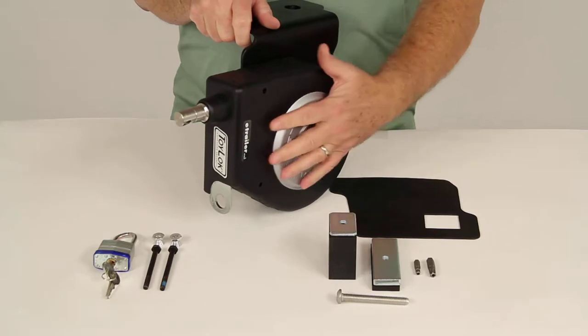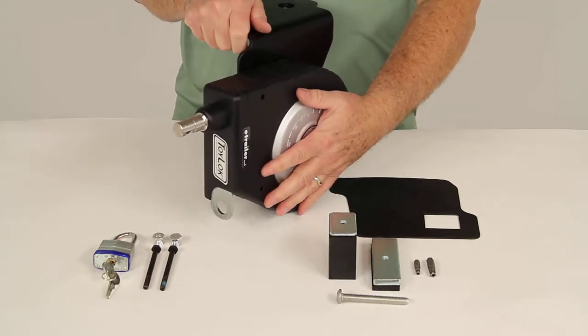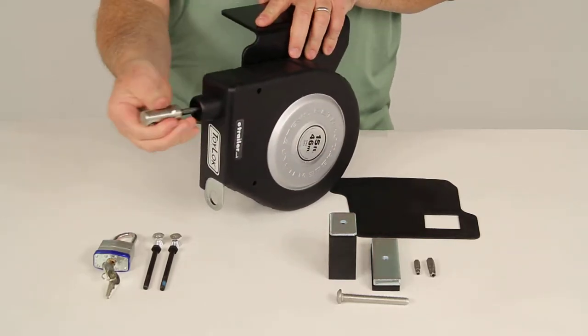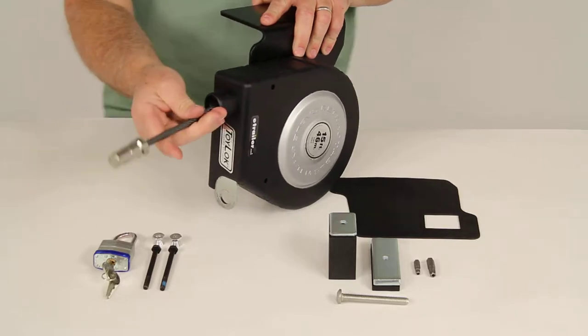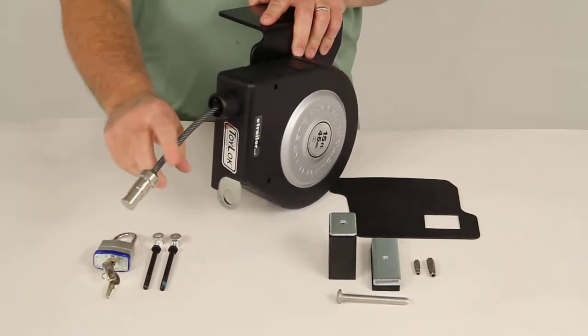The cable is all in this nylon case that won't dent, scratch, or rust. The retractable cable itself will thread through the items you want to secure and then bring it back down to lock it into place.